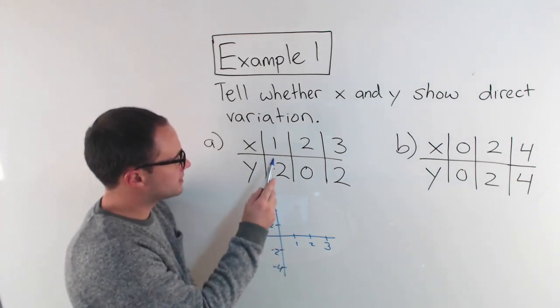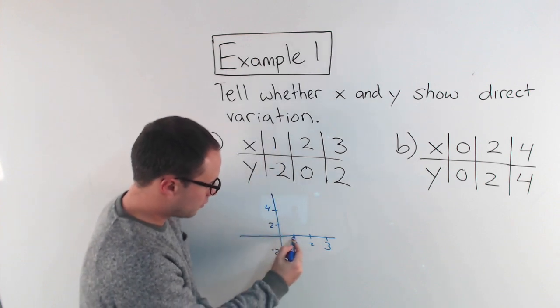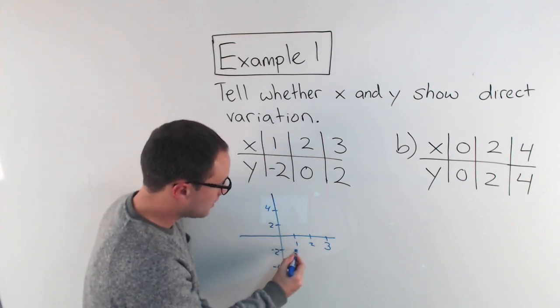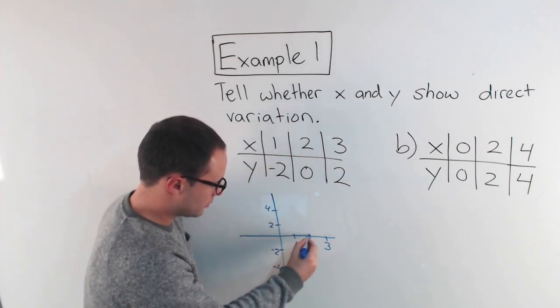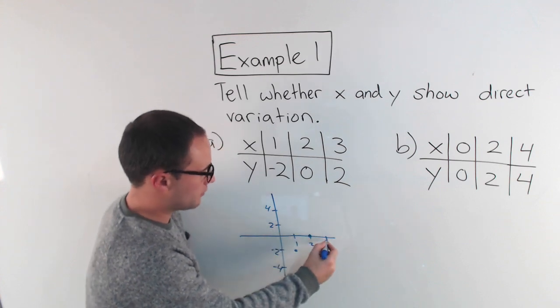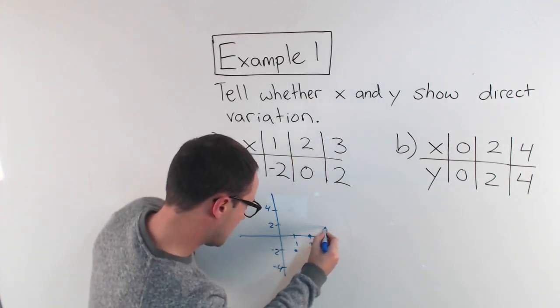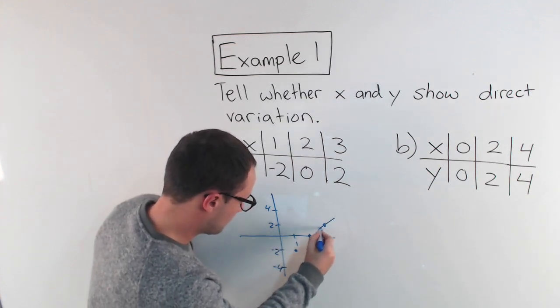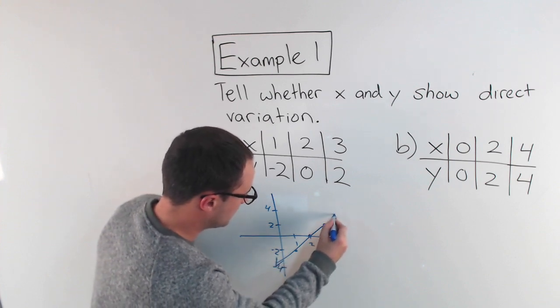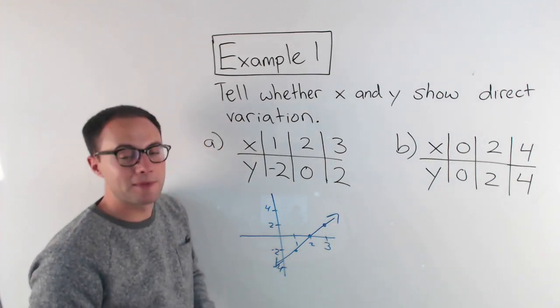So first ordered pair, 1, negative 2. So 1, negative 2 would be there. Then 2, 0. 2, 0 would be there. And then 3, 2 would be there. Okay. Connect my points. And the line looks something like that.